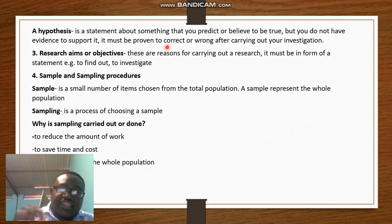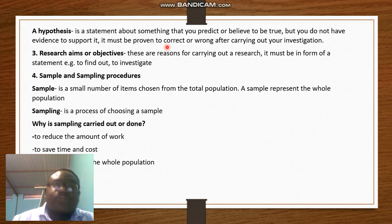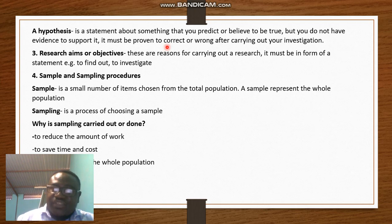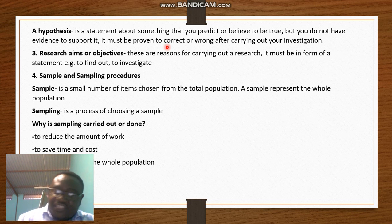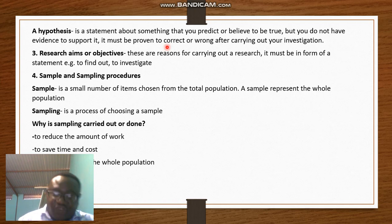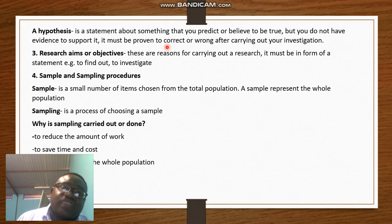For example: 'Drug abuse among teenagers is the main reason why teenage pregnancy is on the rise in Rundu.' You are making a statement — predicting that the reason teenage pregnancy is high is because teenagers are abusing drugs. It does not mean that is the truth. At the end of the research you might discover other contributing reasons. A hypothesis is a statement predicting something you believe in, but it must be proved correct or wrong by the research you carry out.